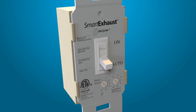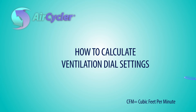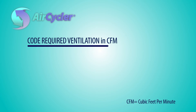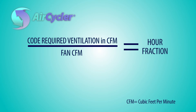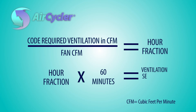To set the Smart Exhaust in compliance with code required ventilation, you will need to know the required CFM for the home. This is typically determined by a blower door test. You will also need to know the fan CFM. Using these two measurements, you can follow a simple formula to calculate the ventilation minutes per hour setting for the ventilation dial.